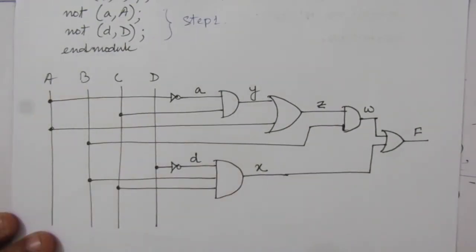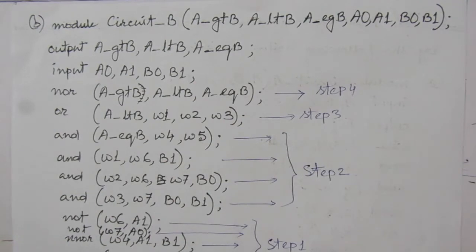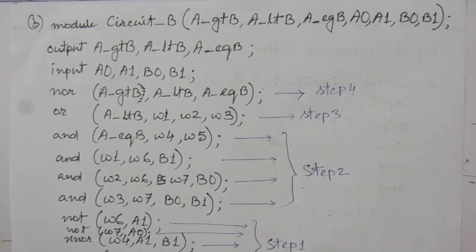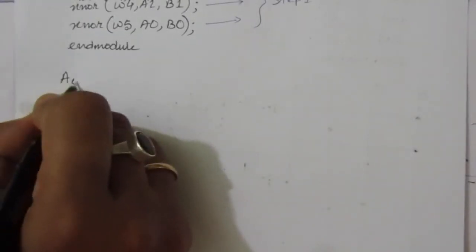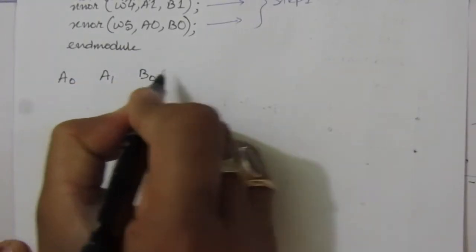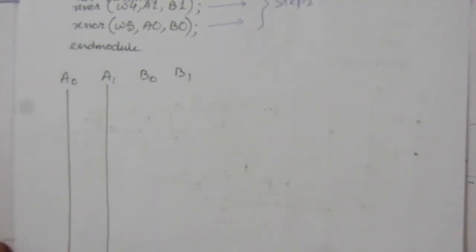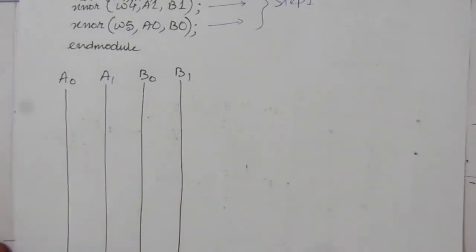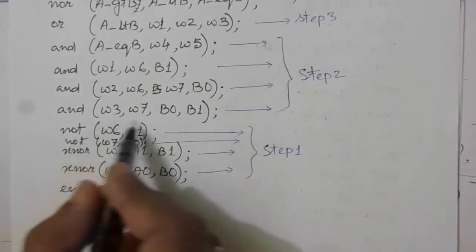Now let us go to the second part of the problem. We are given a second Verilog gate-level description code. First we draw the input lines, similar to the previous case. The inputs are a0, a1, b0, and b1, so we draw four input lines.